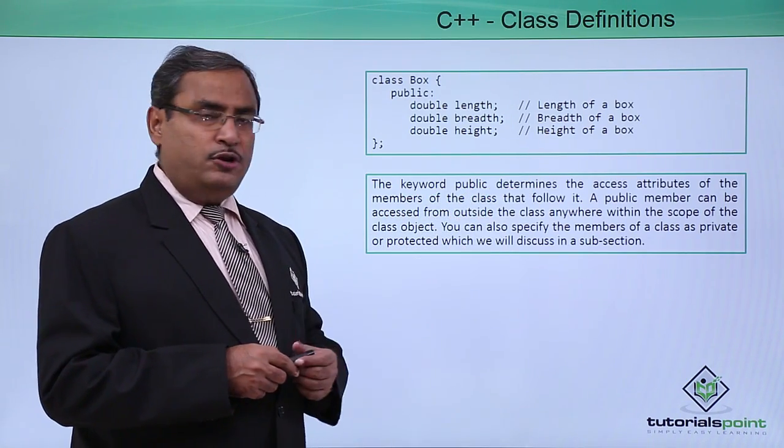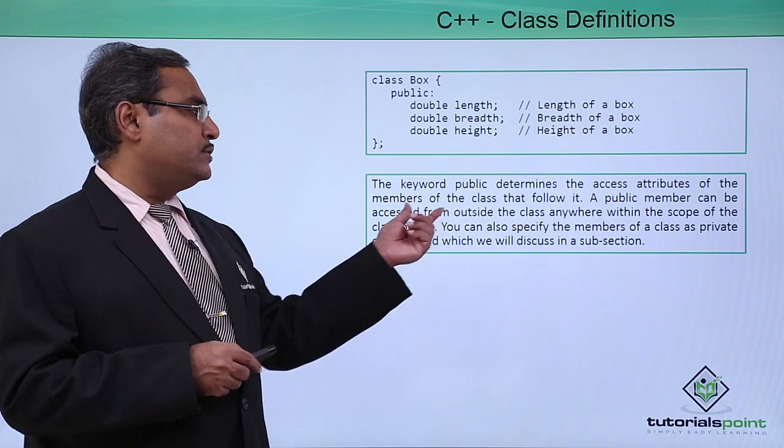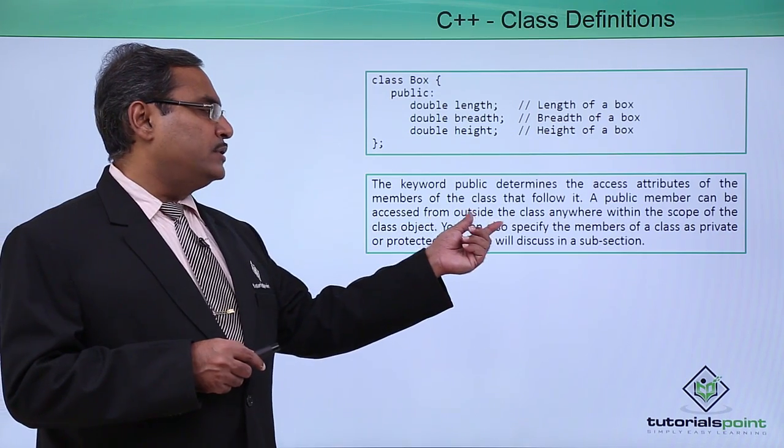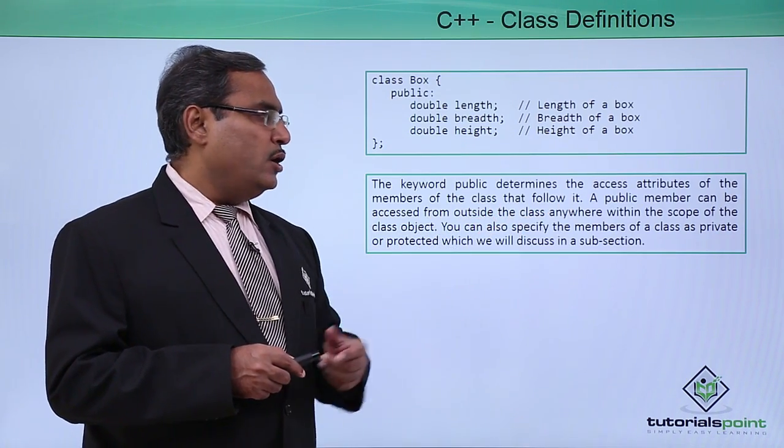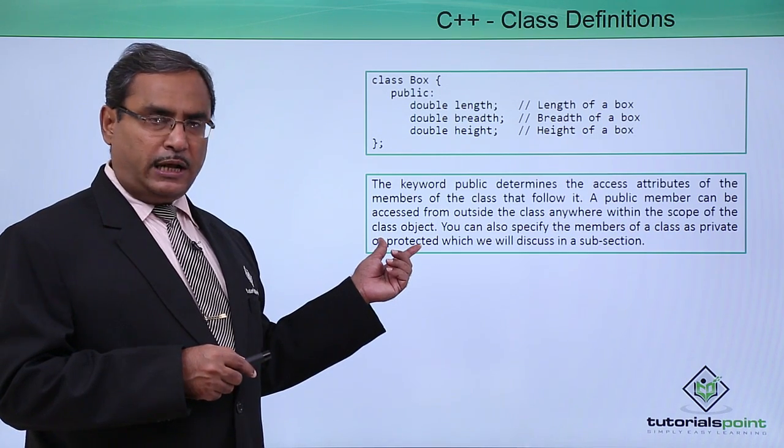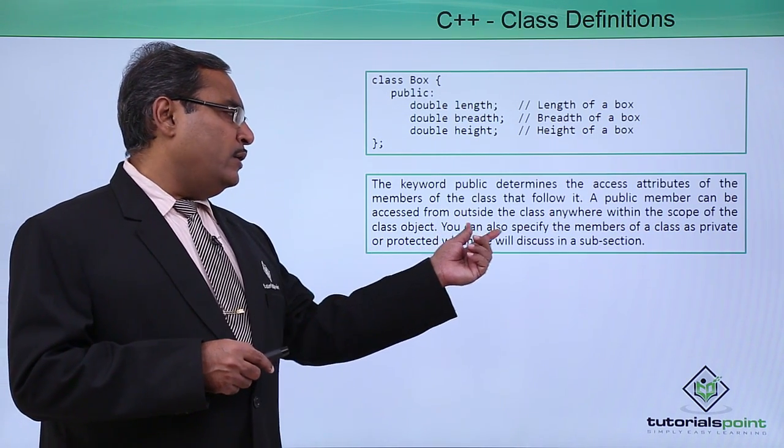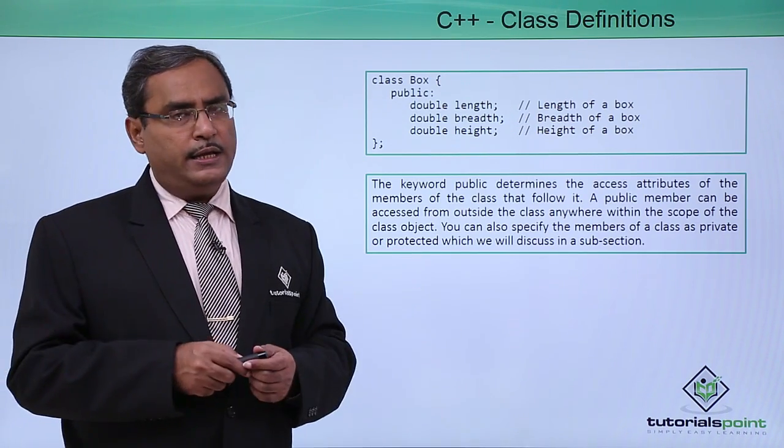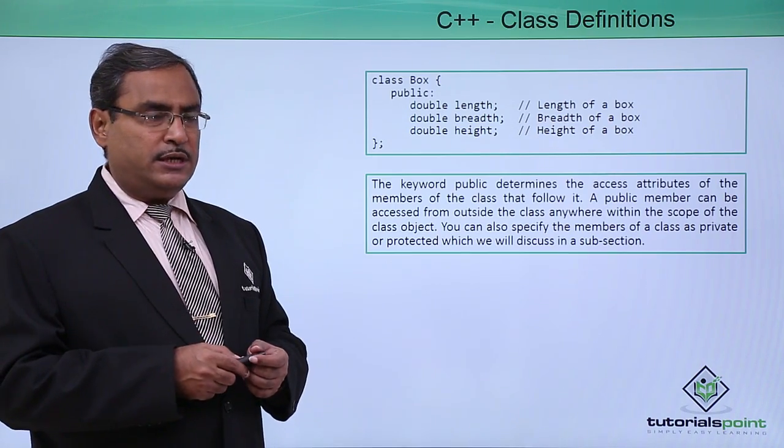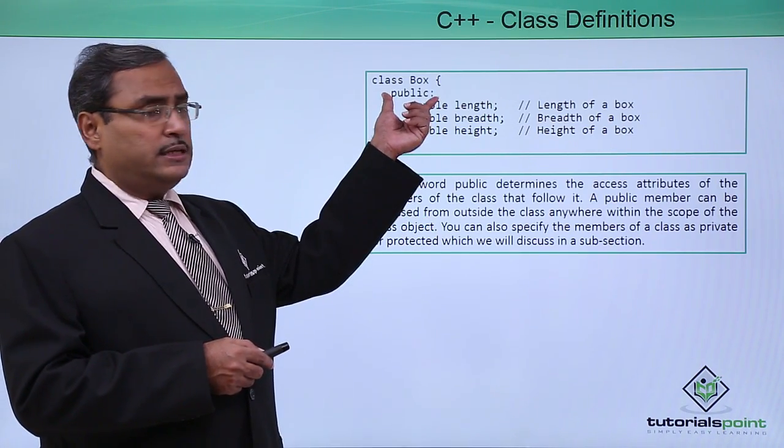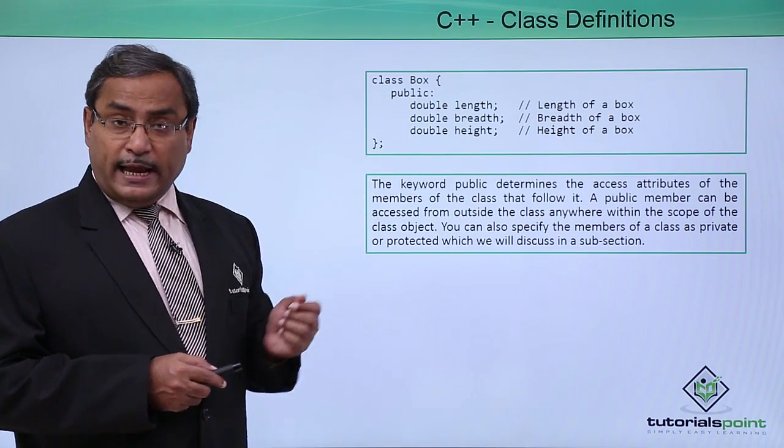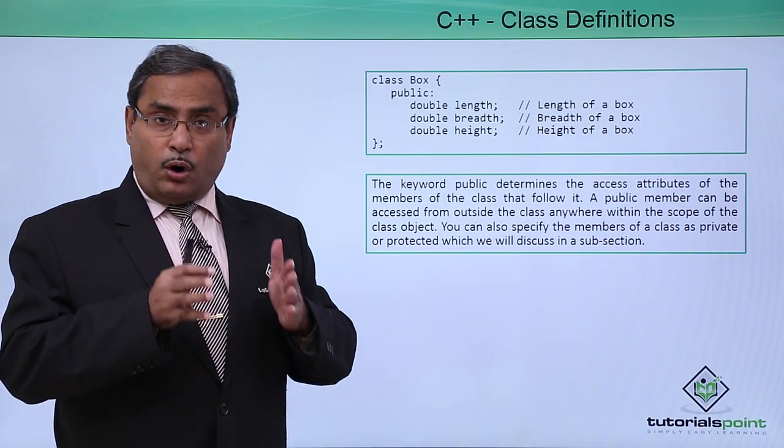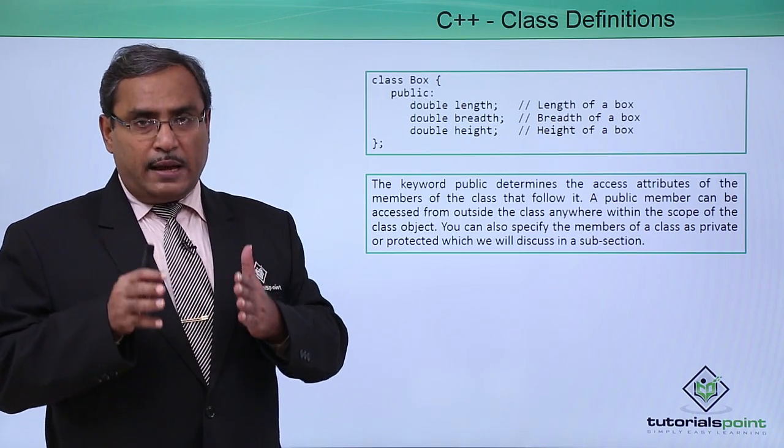The keyword public determines the access attributes of the members of the class that follow it. A public member can be accessed from outside the class anywhere within the scope of the class object. You can also specify members as private or protected, which we will discuss in our next sections. This is under the public scope, which means these members are accessible from outside the class where the object has its scope.